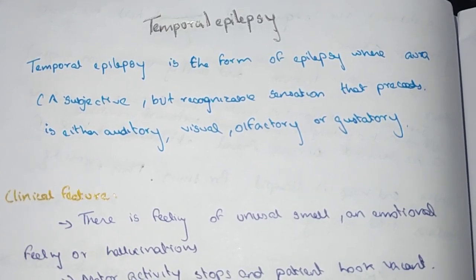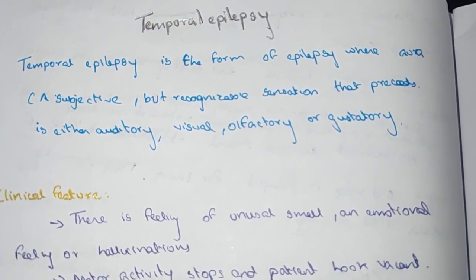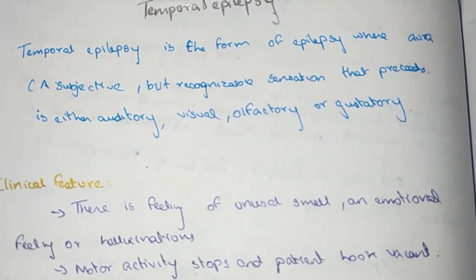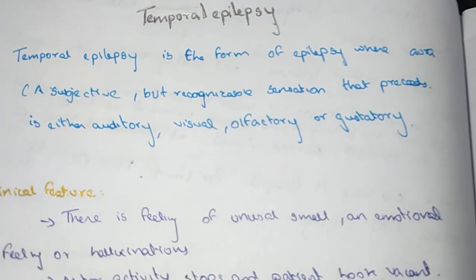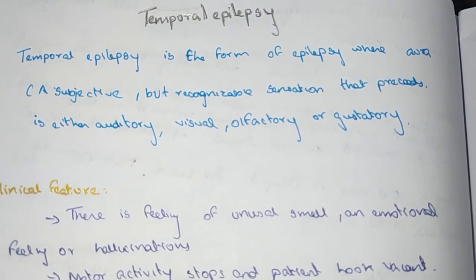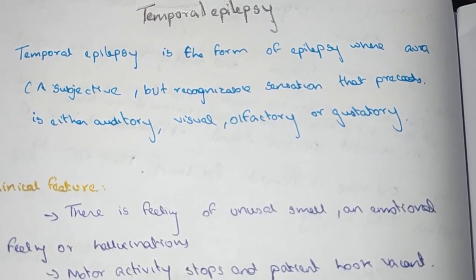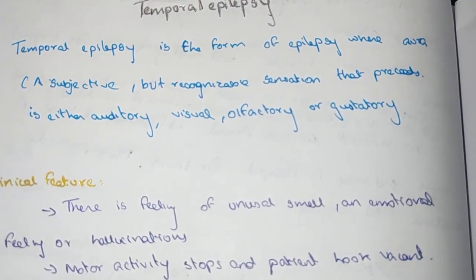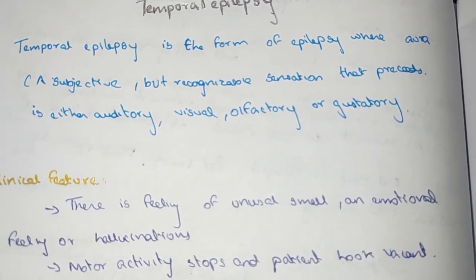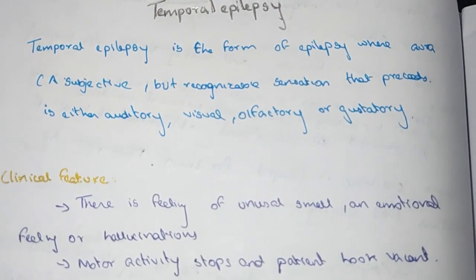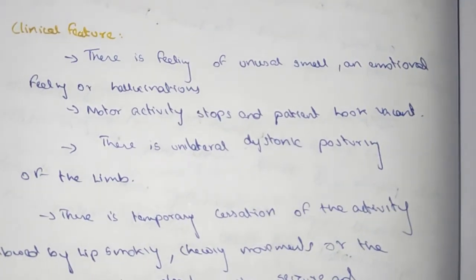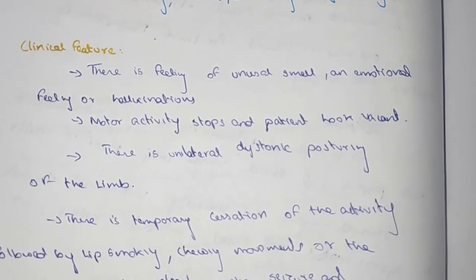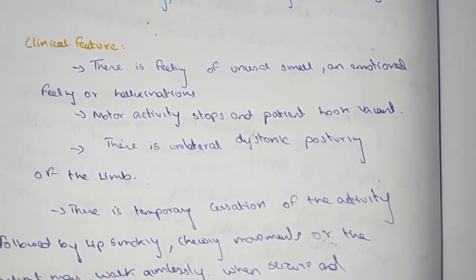Temporal epilepsy is a form of epilepsy where aura is a subjective but recognizable sensation that proceeds. It is either auditory, visual, olfactory, or gustatory.